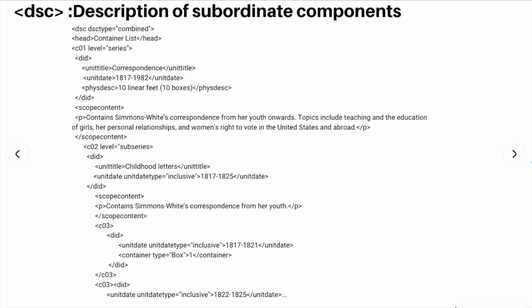The Description of Subordinate Components, or DSC, is the section of the EAD structure that accommodates multi-level description. It is made up of component elements that are nested to reflect the hierarchy we see in archival description. This might start with information about a series through a DID and other descriptive elements, followed either by the description of sub-series or files within this series. A sub-series in itself could again include further sub-series as well as files, and so on. Each component element is required to have a DID element, but it may also contain any of the other elements available for the collection level, such as Scope Content or Access Restrict, as you can see here.